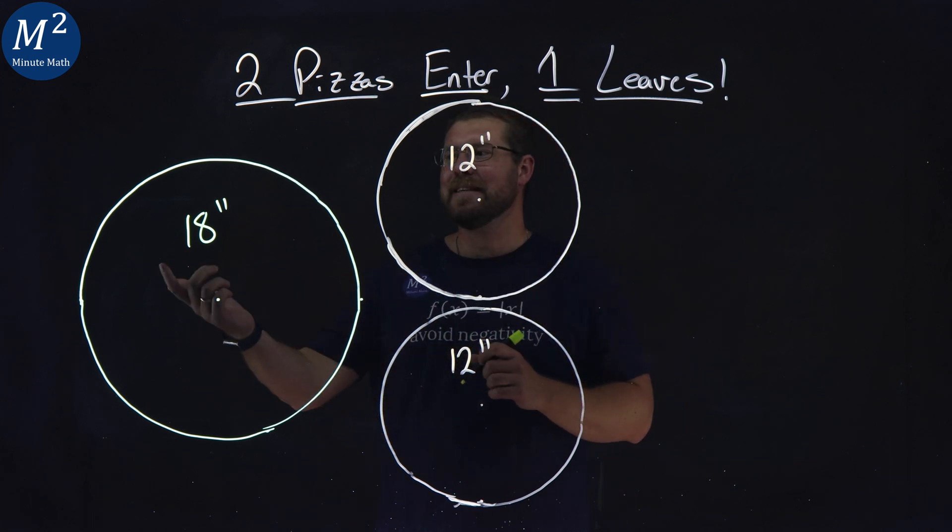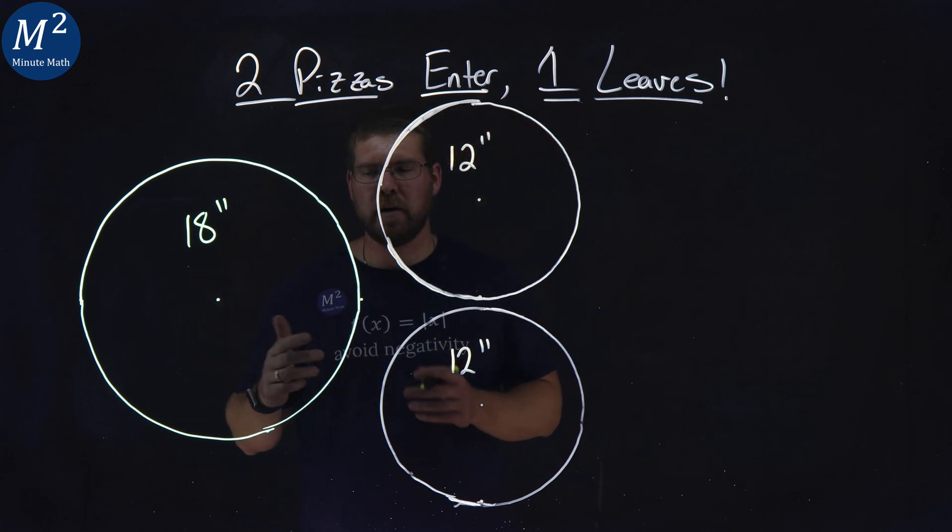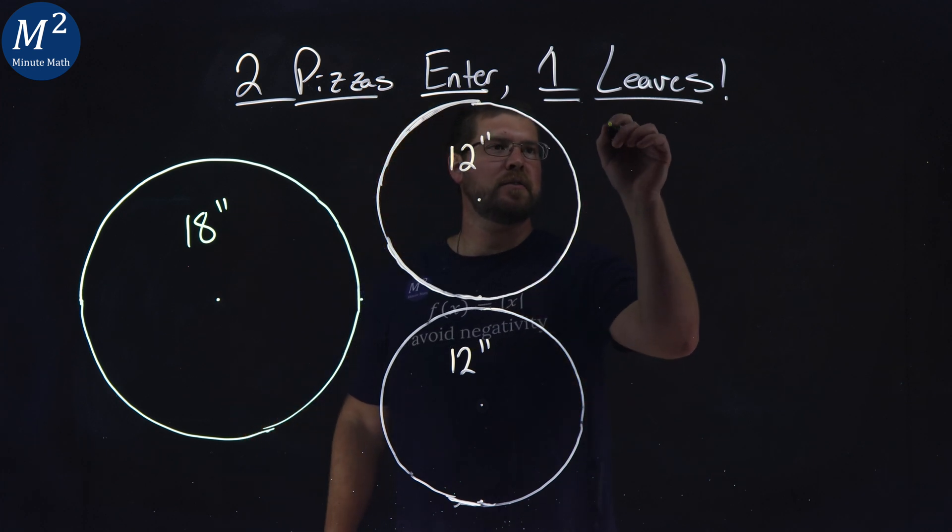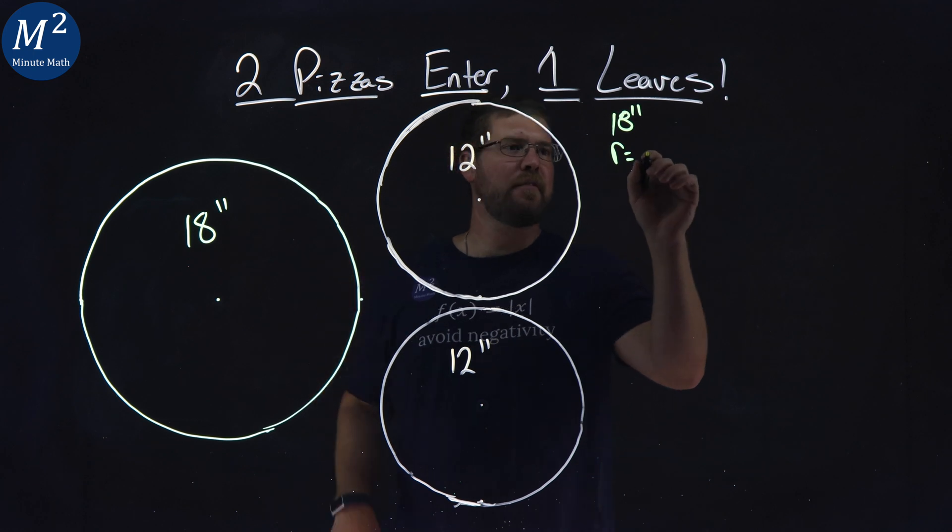The first one, we have an 18-inch pizza right here with an 18-inch diameter, meaning its radius is half of that, which is 9.